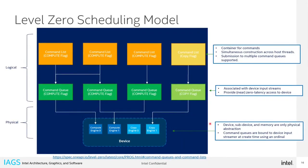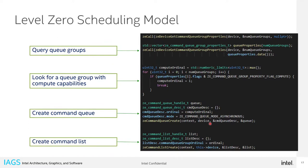Here is a figure showing the relationship between command lists and queues. The command lists above contain the commands the user wants to submit. Those are submitted to the command queues, which may have been created with compute or copy flags, and those are associated with the actual input streams in the device. You first query for the command queue groups available in your device — this tells you how many input streams are available and their capabilities: compute, copy, cooperative kernel capabilities, etc.